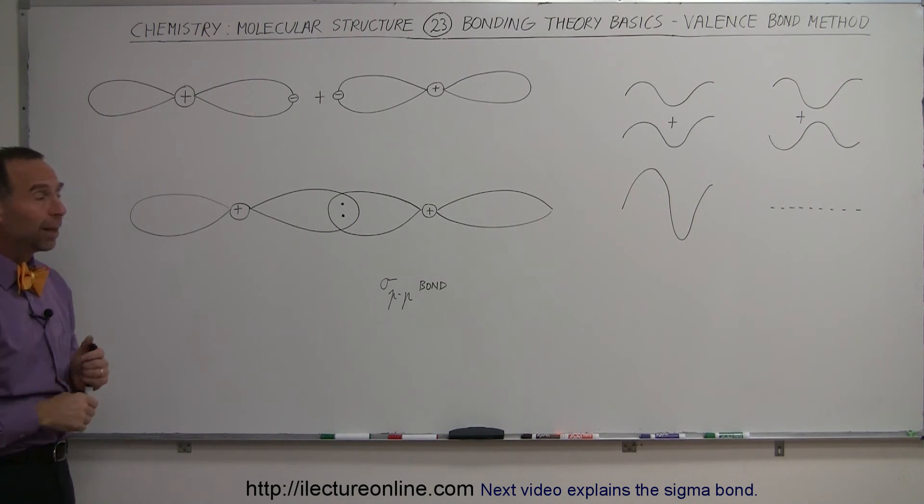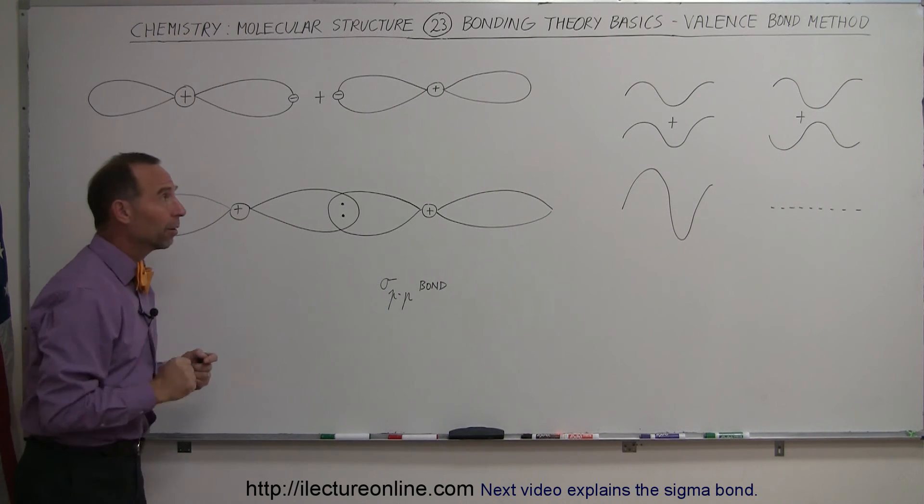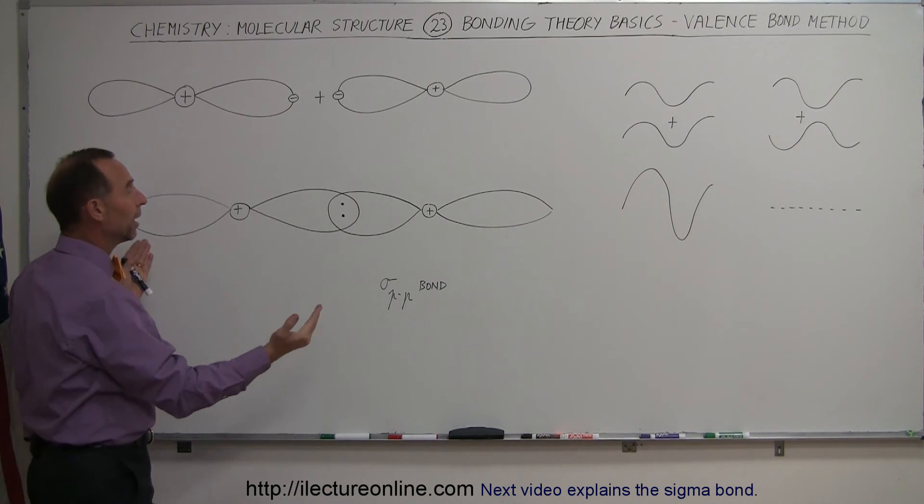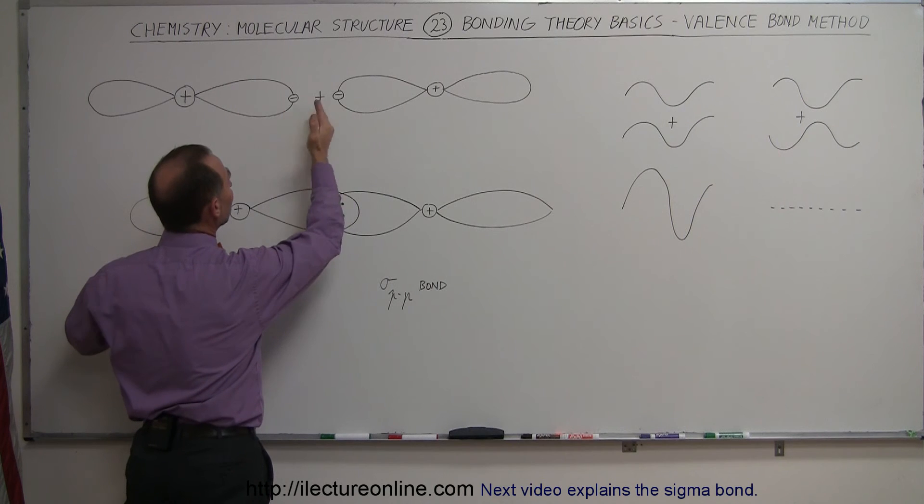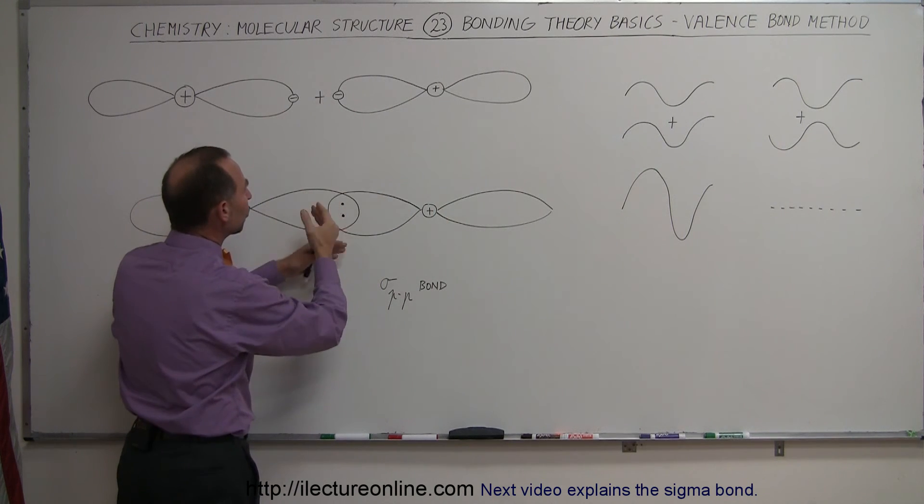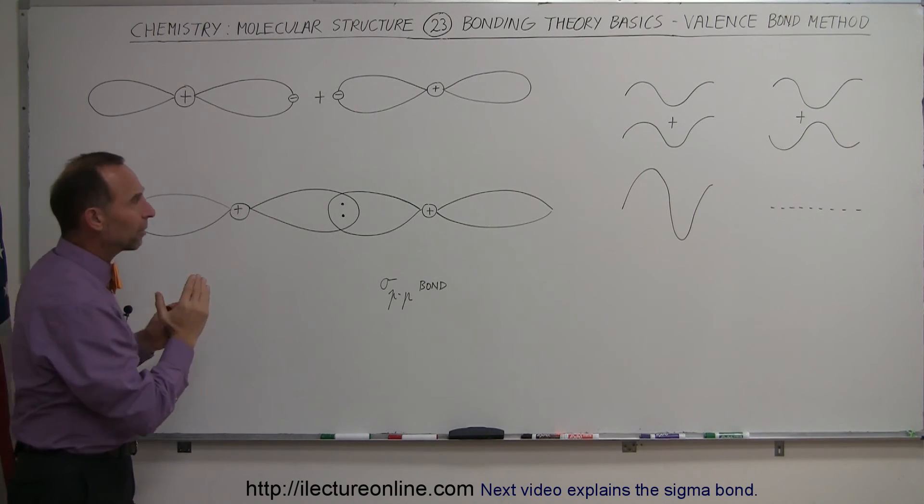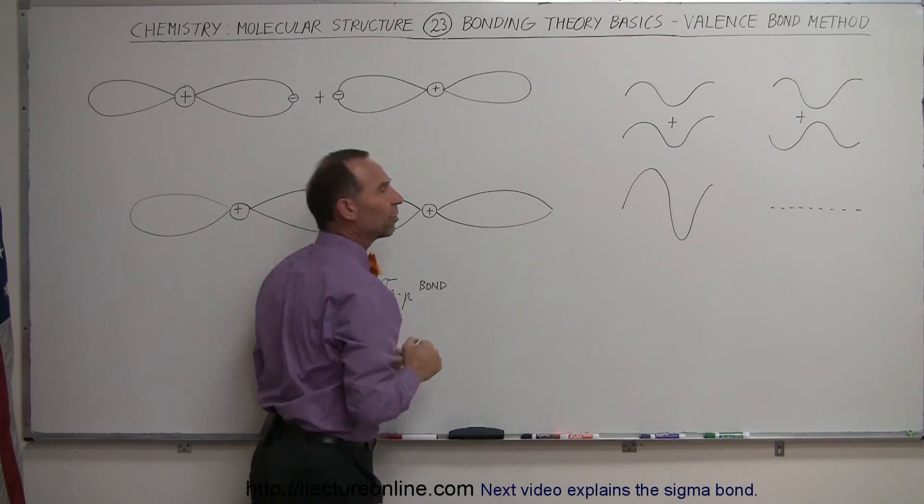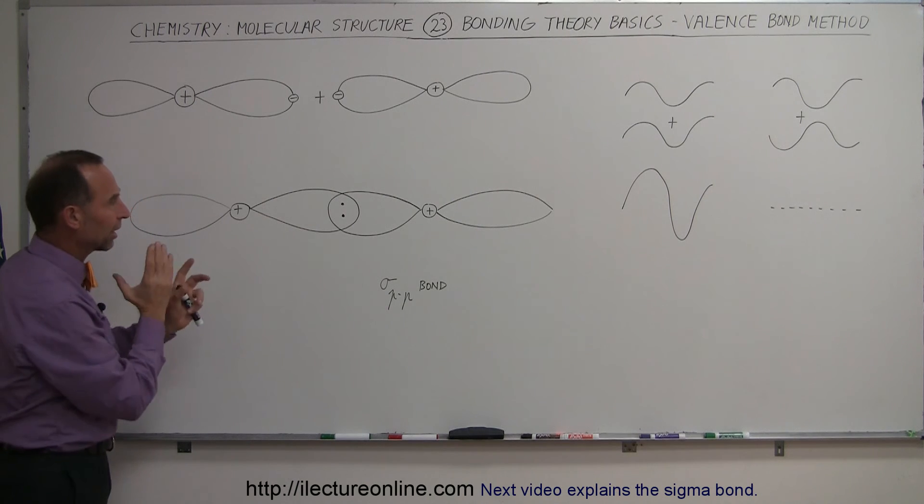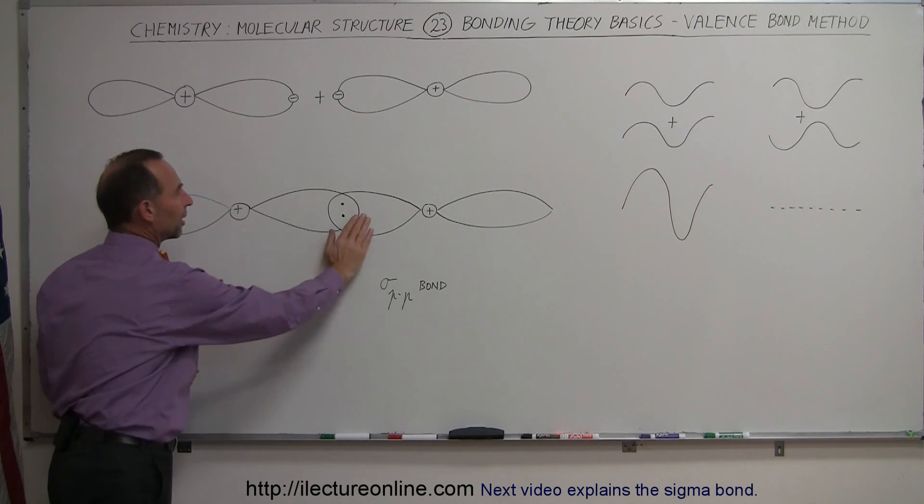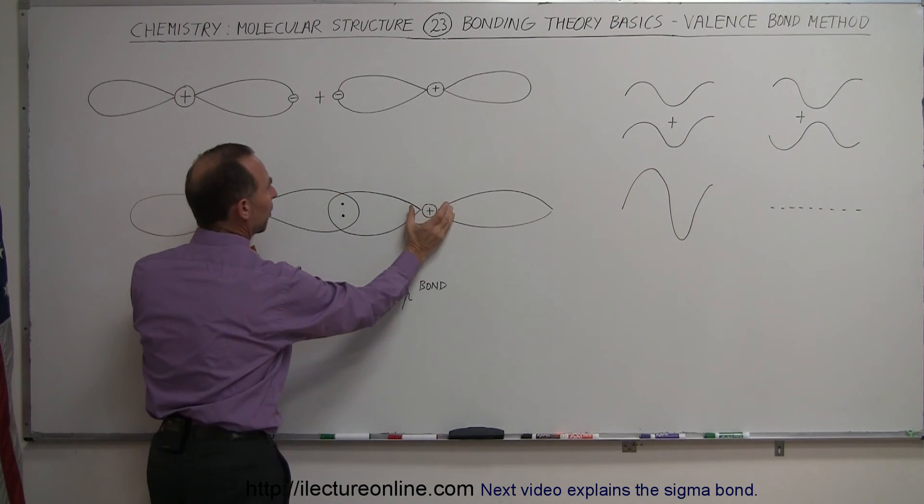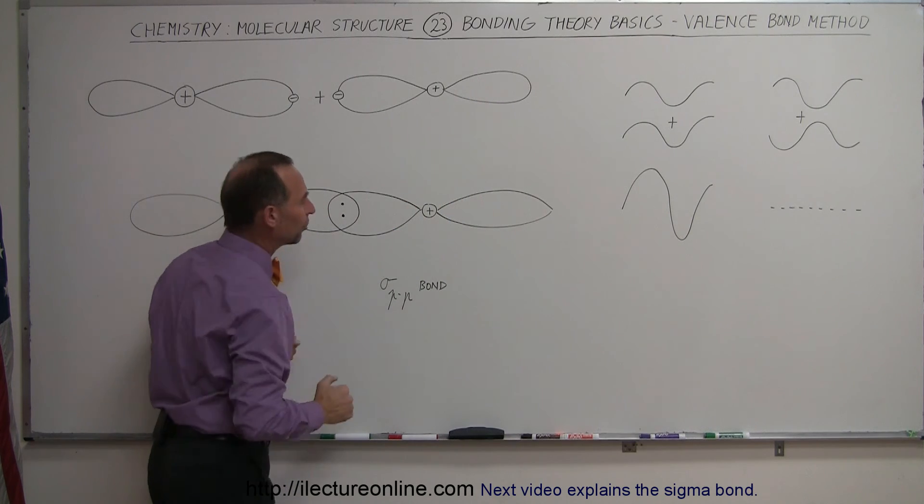So again, bottom line, the valence bond method, as we call it, is simply a mechanization where you only have one electron in each orbital. The orbitals can overlap, they can share a space together between them that will be electronegative because the two electrons will act in such a way that they're in phase, therefore they can exist in that region. This becomes an electronegative region, attracted to two positive nuclei, bring them together,